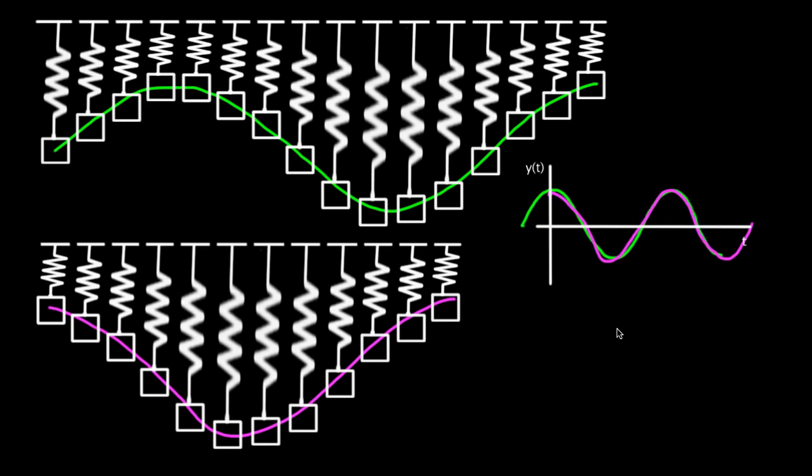And so the word physicists use for this idea that two graphs can differ by the amount one is shifted is the idea of the phase. We would say that these two oscillators are out of phase. How out of phase? Well, one whole cycle would be from here all the way to there. They're not that out of phase. They're just shifted by this much. And that, it turns out,